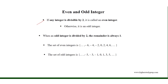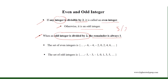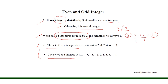Even and odd integers. If any integer is divisible by 2, it is called an even integer; otherwise, it is an odd integer. When an odd integer is divided by 2, the remainder is always 1. For example, when we divide 5 by 2, we get 5 equals 2 times 2 plus 1, where 1 is the remainder, 5 is the dividend, 2 is the quotient, and 2 is the divisor. The set of even integers includes 2, 4, 6, and so on, while 1, 3, 5, and so on are the elements of the set of odd integers.